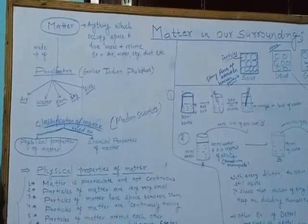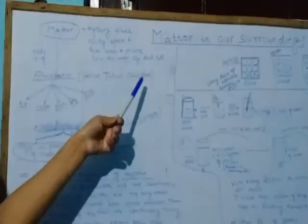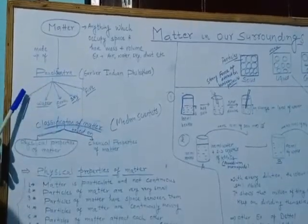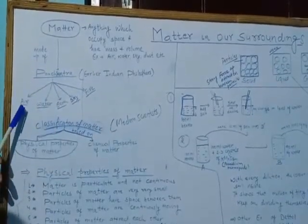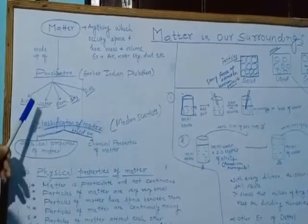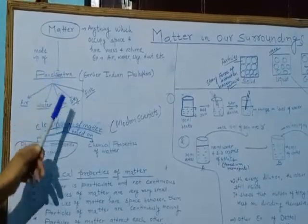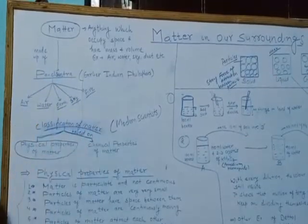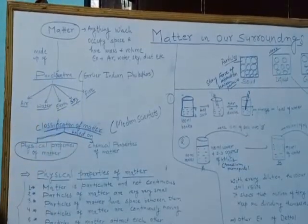According to earlier Indian philosophers, matter is made up of Panchatantra. These five elements are air, water, earth, sky, and fire.